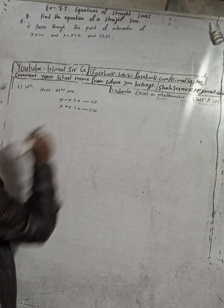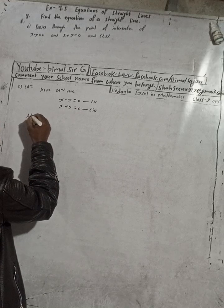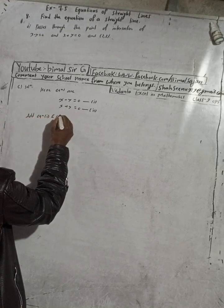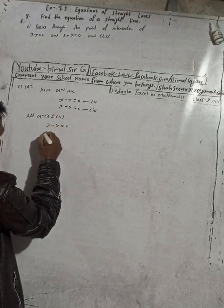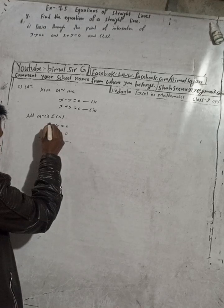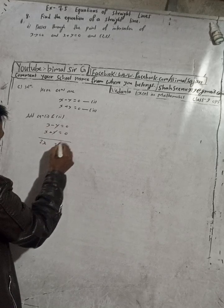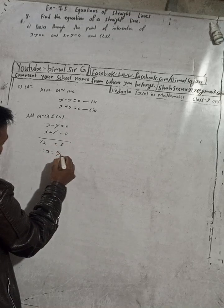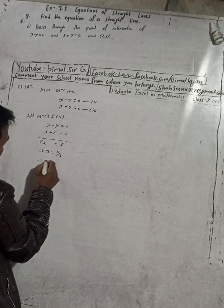So when we solve this equation, we will get x and y values. Just simply add equation 1 and 2. So here, x minus y equals 0 and x plus y equals 0. Adding means x plus x is 2x, minus y plus y is cancelled, so this is equal to 0. Therefore, x equals 0 by 2, this implies x equals 0.